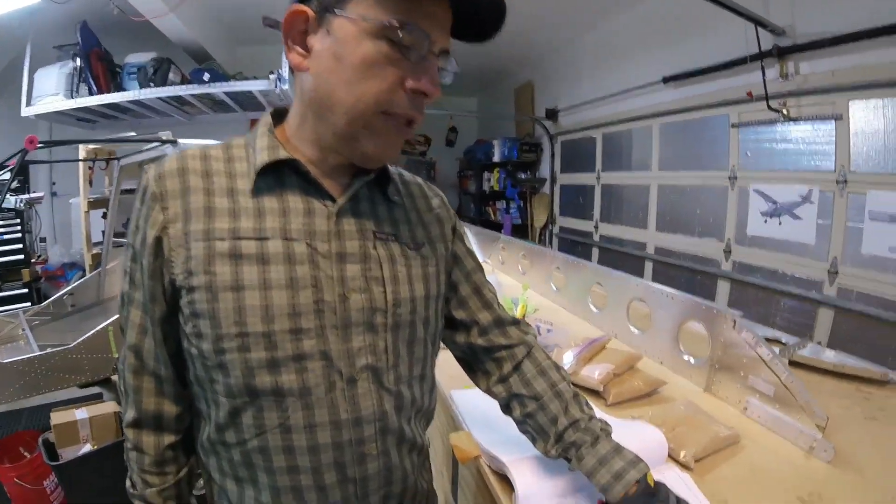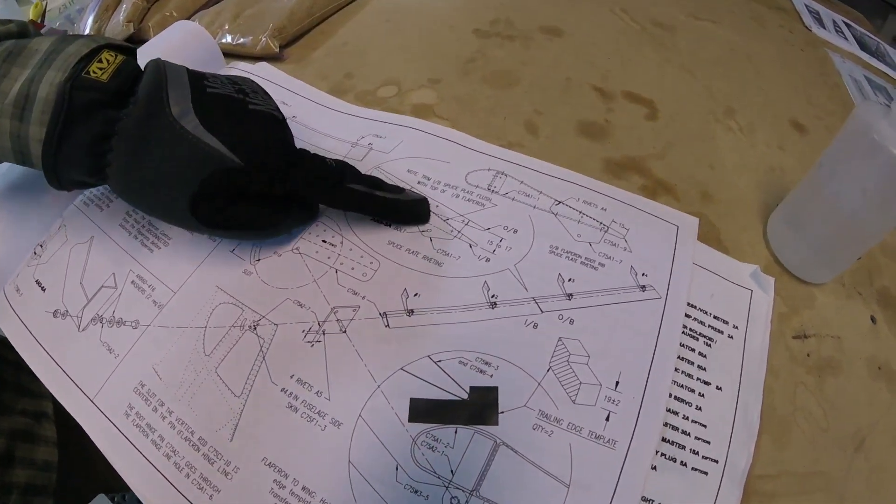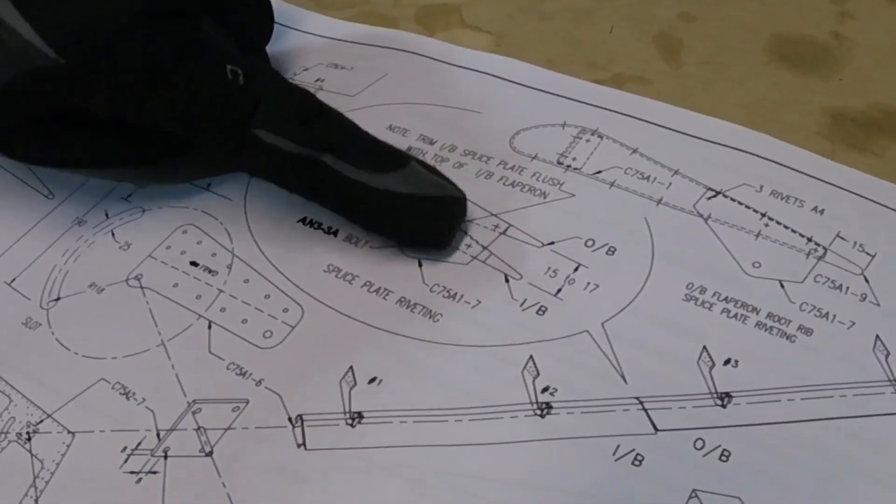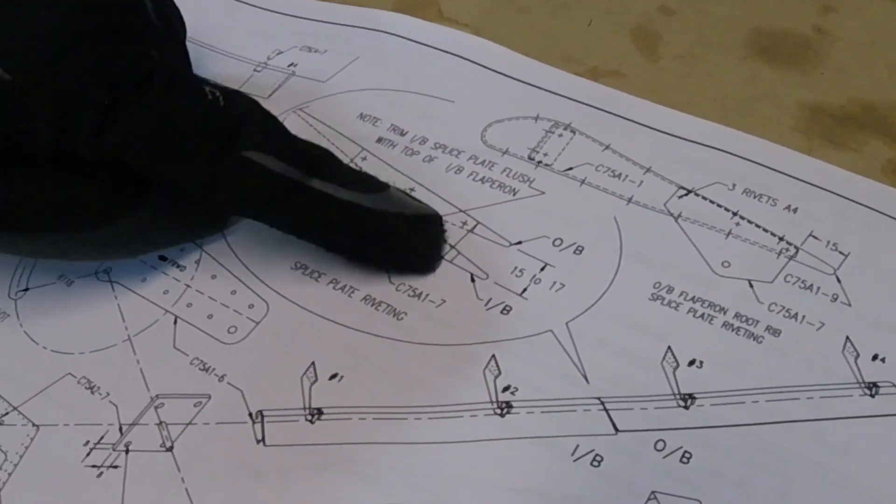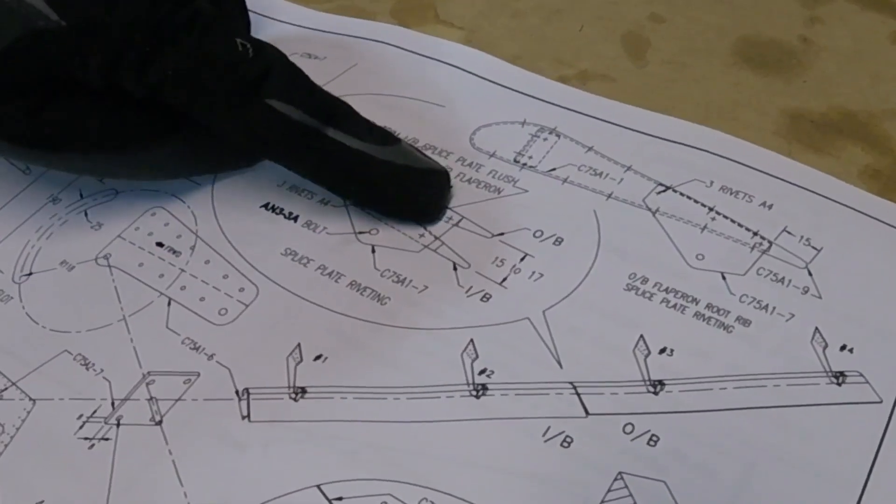Yeah, so essentially the way we did this—from this diagram you can see the plate following the line of the flaperon—what we did is shifted the plate just a little bit up so that we got more meat, or more metal material, on this plate on the rivet. So there's a bit better there.